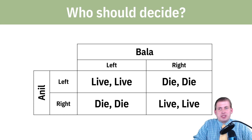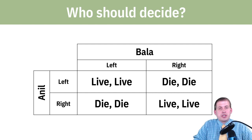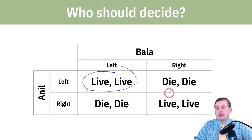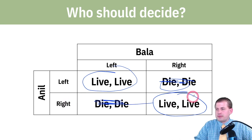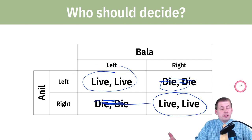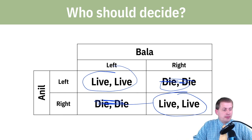Here's a simple game theory matrix using words instead of numbers. Anil and Bala are in a new country and have to decide what side of the road to drive on. They either both choose left or both choose right — otherwise they crash. So either outcome, a left-driving or right-driving country, works fine. But who gets to decide?